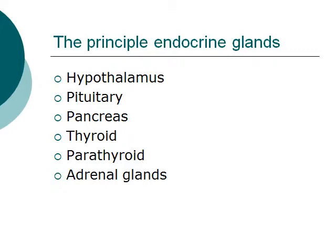There are six major endocrine glands. These are the hypothalamus, the pituitary, the pancreas, the thyroid, the parathyroid, and the adrenal glands.